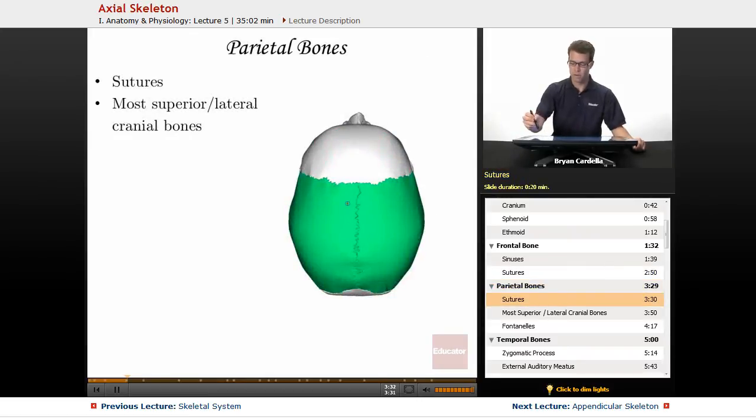Next up, the parietal bones. You can see there is a major suture right here. This is simply called the sagittal suture. I'm not going to draw that the whole way down, but that connects the two parietal bones to each other. You can see also there is a suture right here connecting it to the frontal bone.